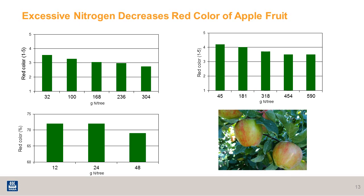The excessive use of nitrogen not only can reduce the calcium concentration in the fruit, but it can also negatively impact red color development in apples. Many studies have found a negative correlation between the nitrogen application rate and red color in the fruit. In this example, we have Honeycrisp apples where you can see there is not very much red color, which is not desirable for consumers.